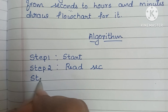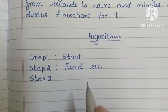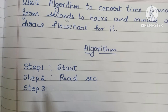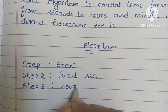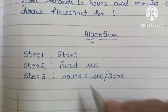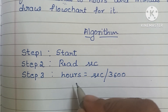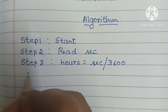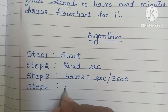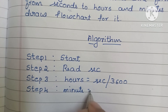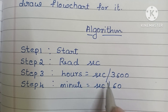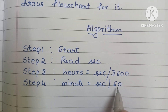In Step 3, we start the calculation to convert seconds to hours. The formula is: Hours = Seconds / 3600. In Step 4, we convert seconds to minutes. The formula is: Minutes = Seconds / 60.